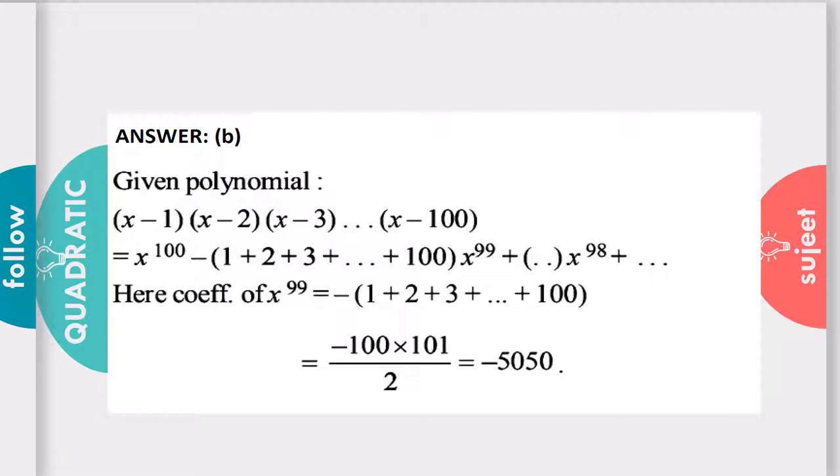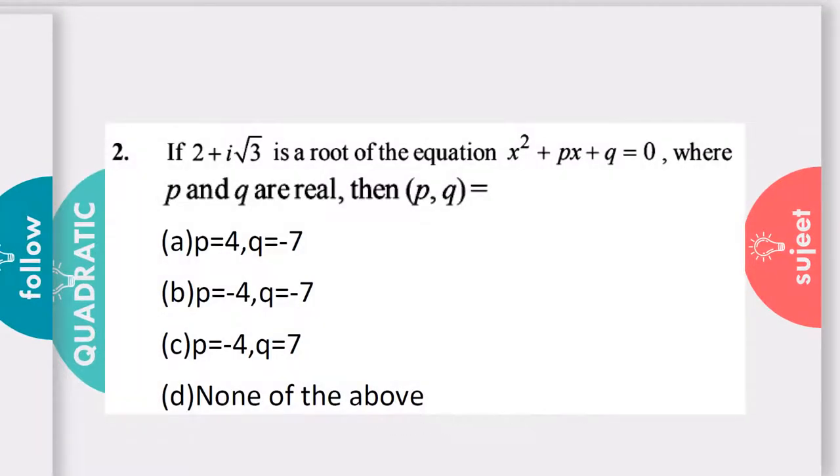I think you have got a brief information of this. Now I would like to move further to the next question. Question number two: If 2+i√3 is a root of the equation x²+px+q=0, where p and q are real, then (p,q) equals what? We have some options: (a) p=4, q=-7; (b) p=-4, q=-7; (c) p=-4, q=7; (d) None of the above.